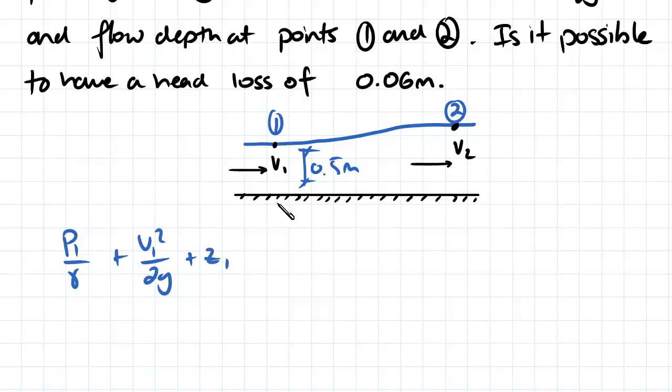Plus our distance from the datum, which we're going to call this water surface here, is equal to the pressure P2 divided by the unit weight plus velocity V2 squared divided by 2g, plus the distance from the datum which is going to be the height of the fluid here, plus our head loss.